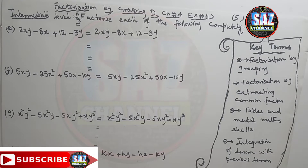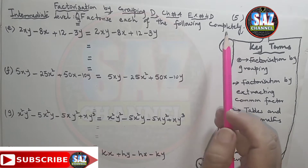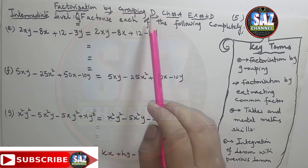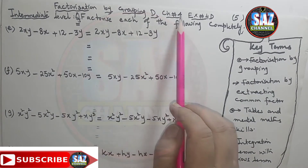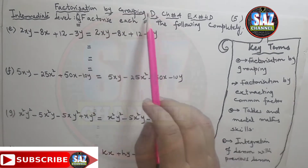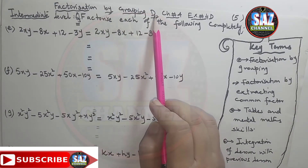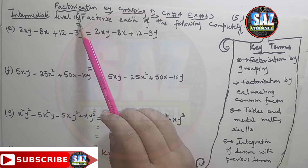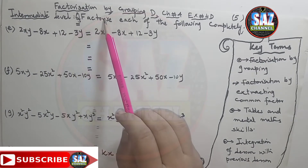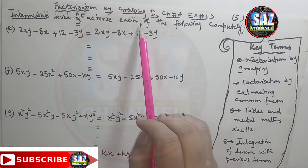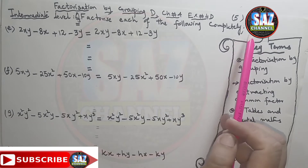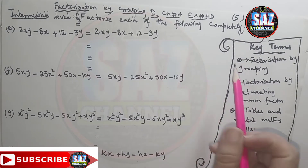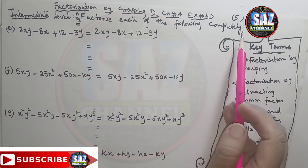Welcome to Mass by Saas. This is my fifth lesson of D2, chapter number 4, exercise 4D, Factorization by Grouping. In this lesson, I will complete question number 5, intermediate level, which says: factorize each of the following completely. With this, we will be able to complete and finish chapter 4.